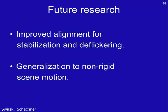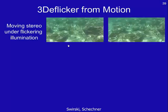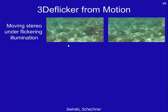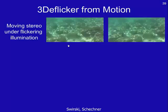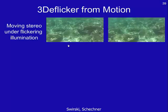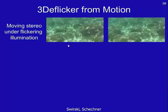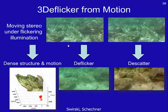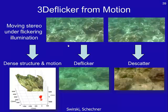In future research, we will try to improve alignment accuracy, which will improve the stabilization and de-flickering results. This work assumes the scene is static with motion only from the camera, so it is possible to extend the work to non-rigid scene motion. In conclusion, we addressed stabilization and motion estimation under flickering illumination using a moving stereo setup. The input data is stereo video pairs with flickering illumination and scattering, and the outputs are dense structure and motion estimation, de-flickering, and de-scattering.